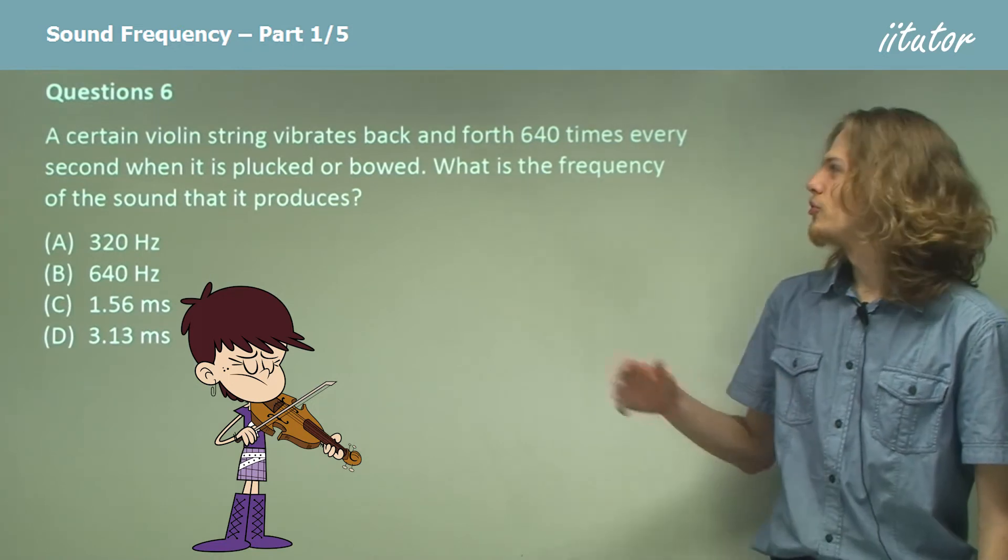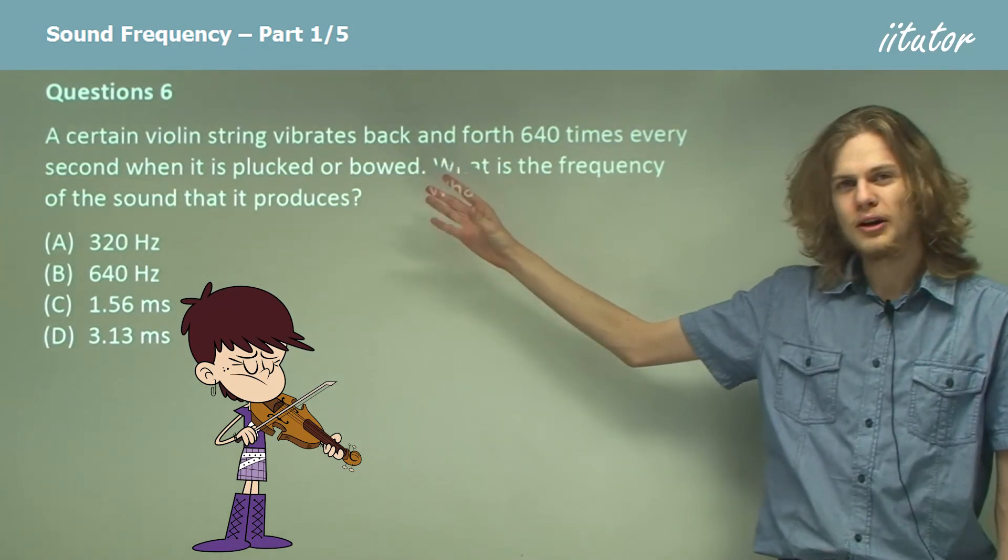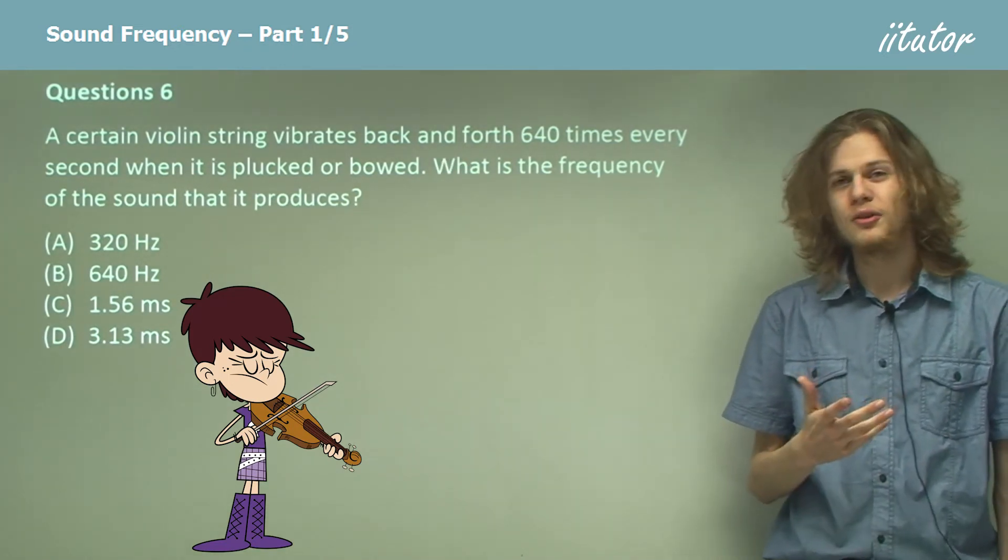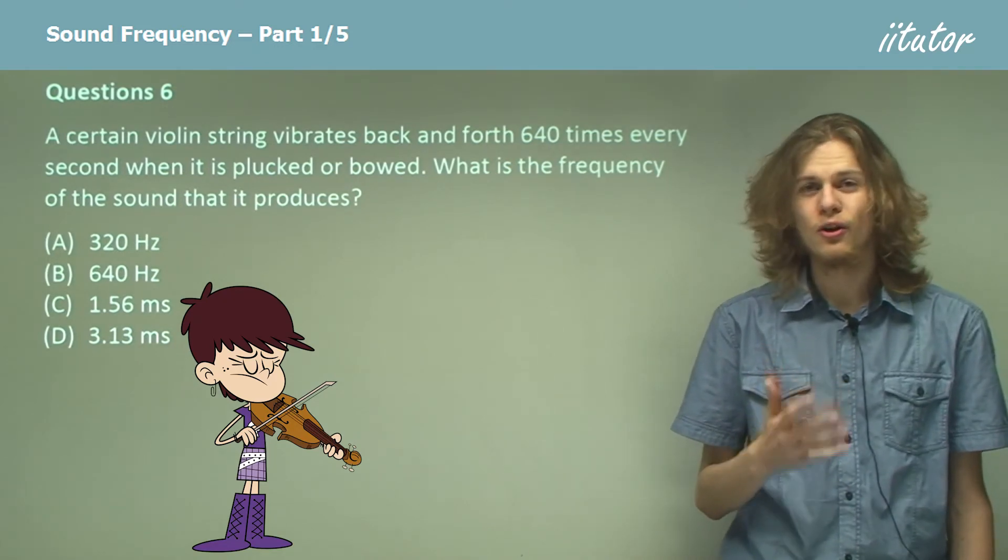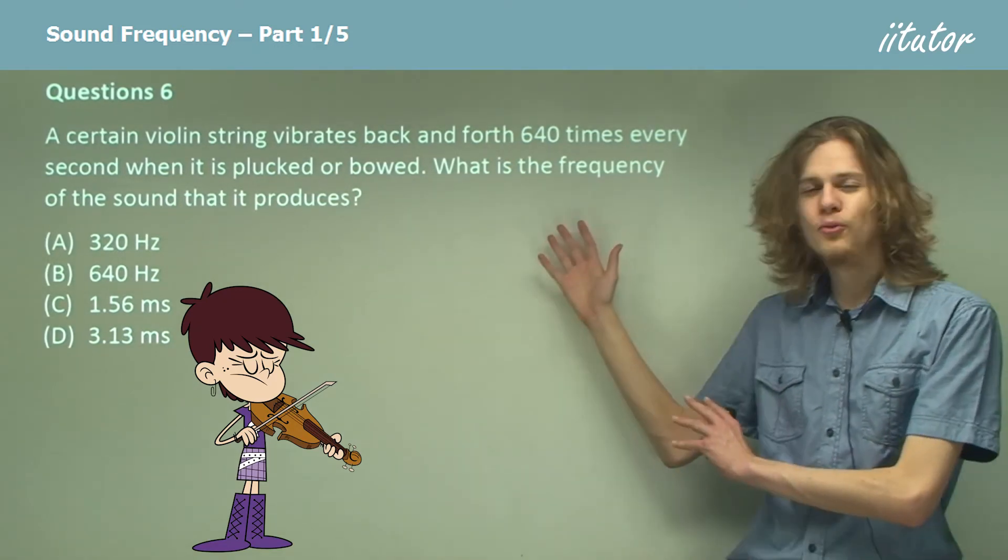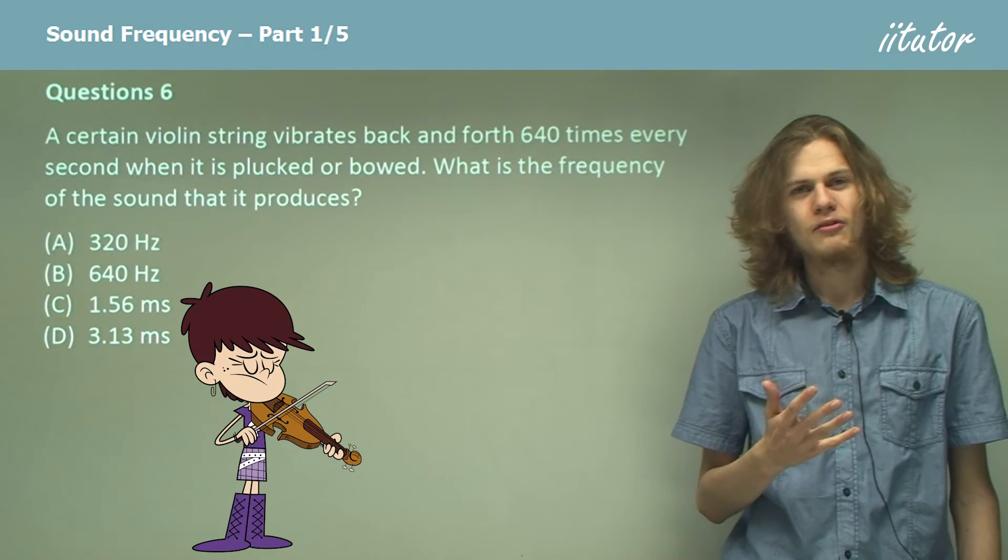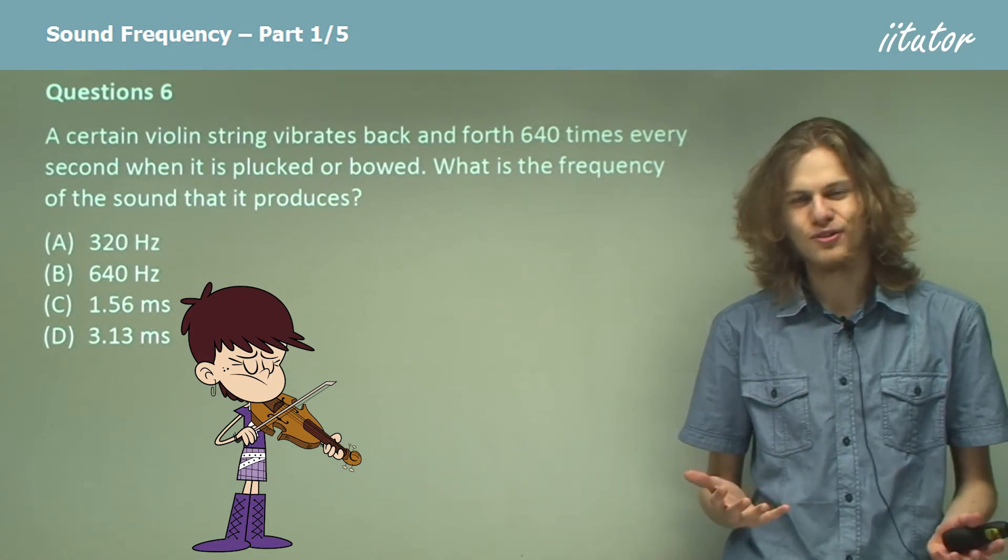In this case that source is a vibrating violin string. If the violin string vibrates at 640 hertz, that is 640 times per second, then the sound wave it produces will be 640 hertz.